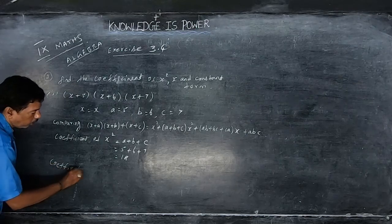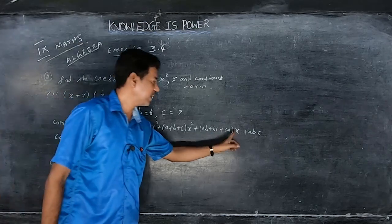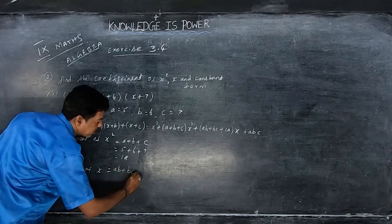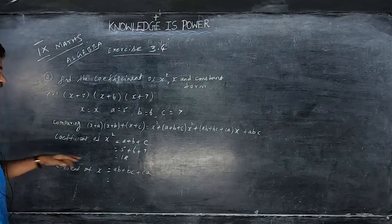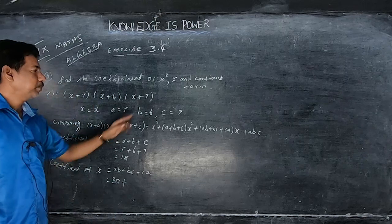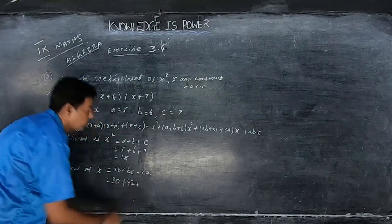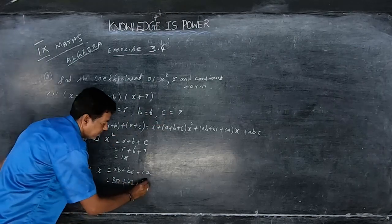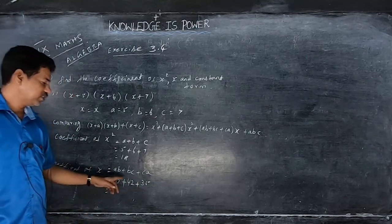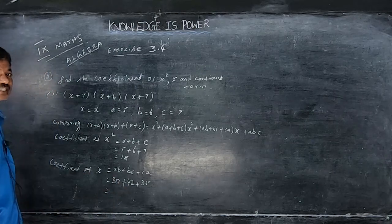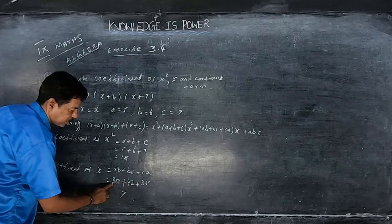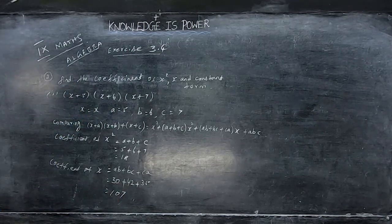Next, the coefficient of x: that term is ab+bc+ca. So apply a=5, b=6, c=7: 5×6=30, 6×7=42, 7×5=35. Adding: 30+35=65, 65+42=107. So the coefficient of x is 107.